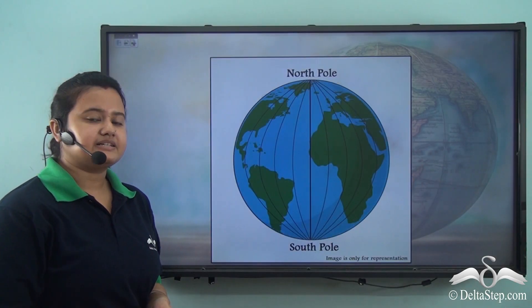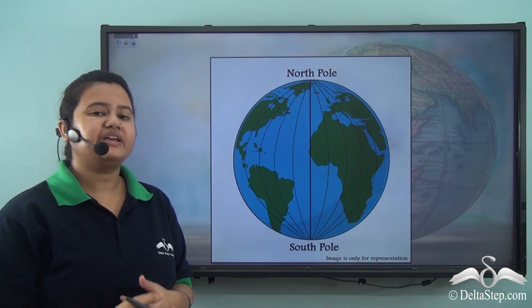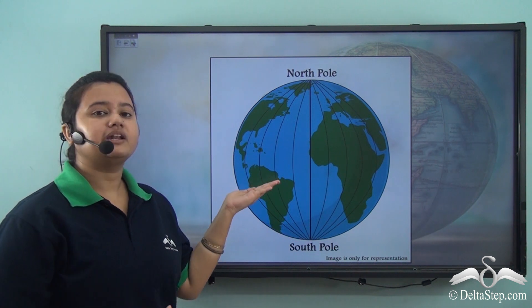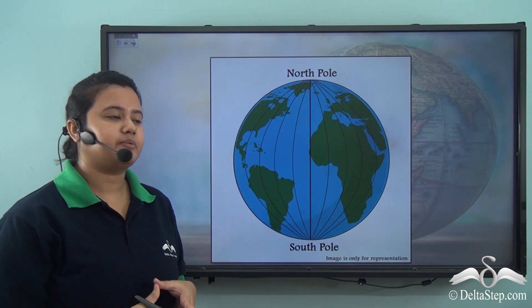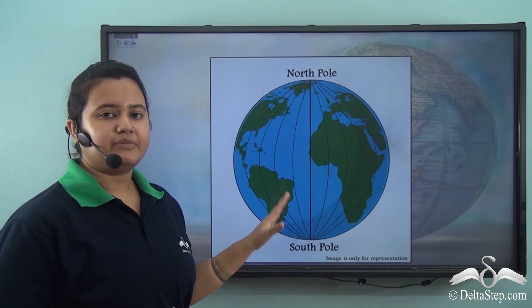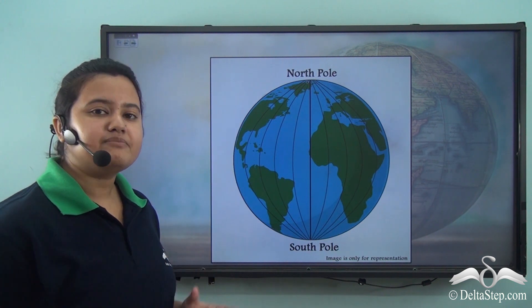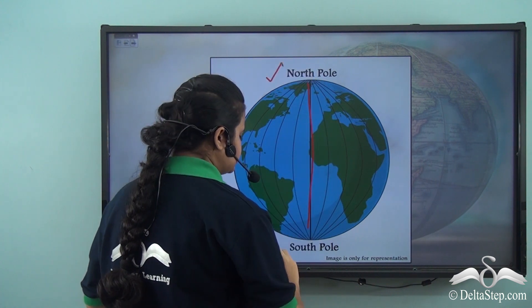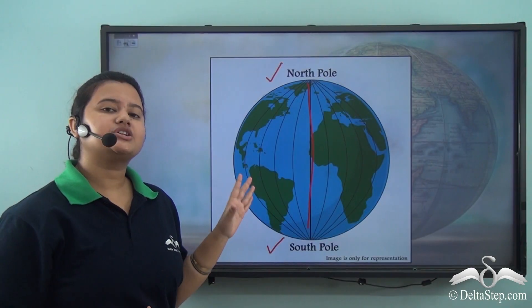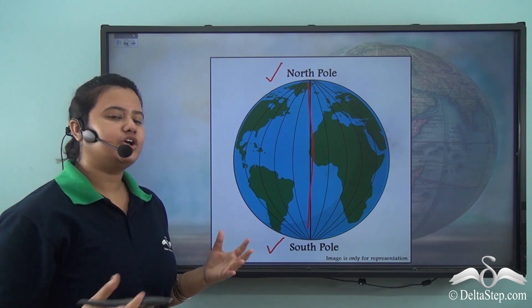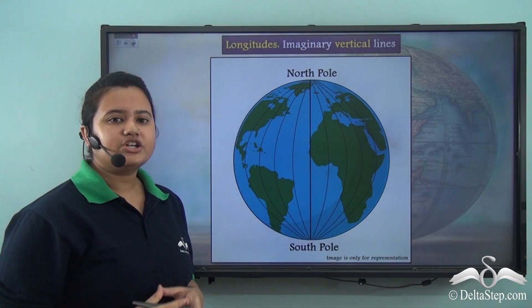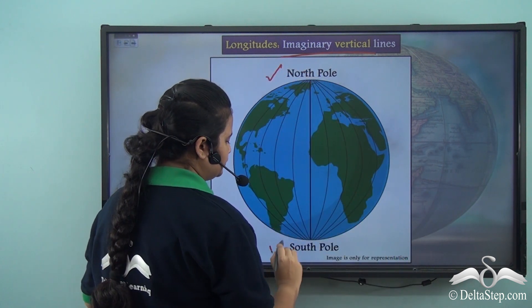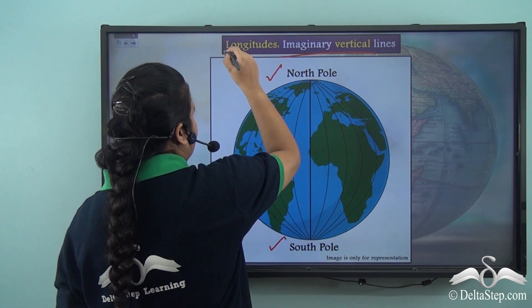The time patterns are determined on the basis of some imaginary lines and this is how the imaginary lines look like if we draw them on a globe. From this image, we can find that the imaginary lines are vertical running from north pole to south pole. Do you know what are these imaginary lines called?